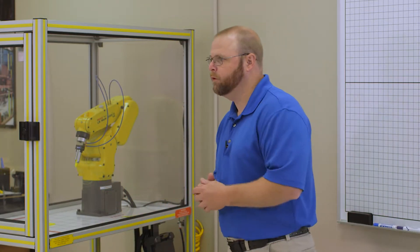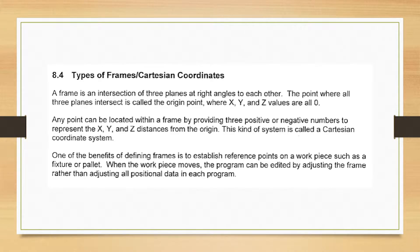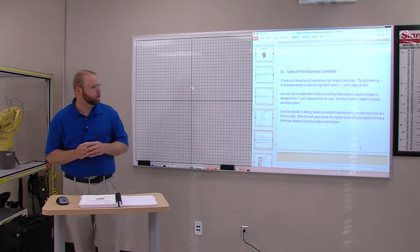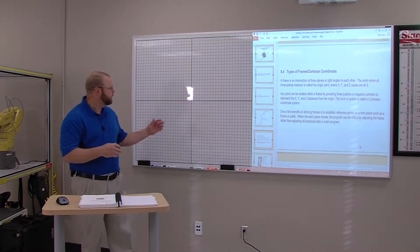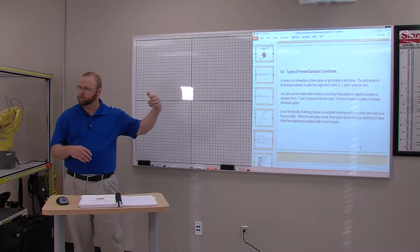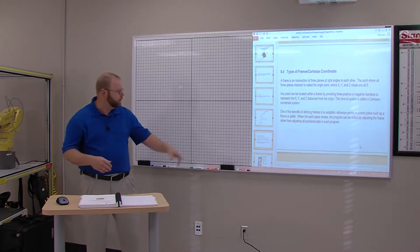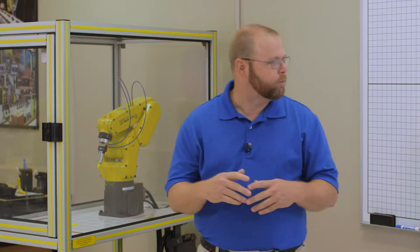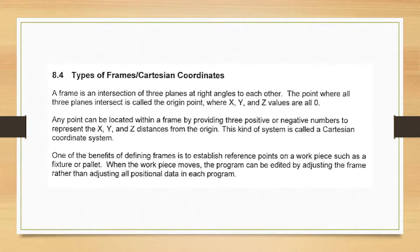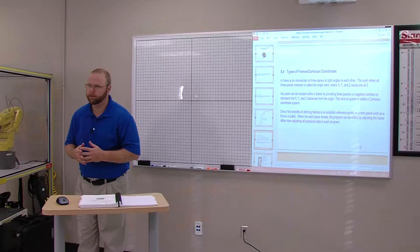So exactly what is a frame? A frame is the intersection of three planes at right angles to one another. The point where all three planes intersect is called the origin point, and that is where X, Y, and Z values are all zero. Just like this Cartesian grid on the board, we have an X axis, a Y axis, and Z would be coming out of the board. Any point can be located within a frame by providing three positive or negative numbers to represent the X, Y, and Z distance from the origin. This is called the Cartesian coordinate system — the foundation for how we navigate our robot.